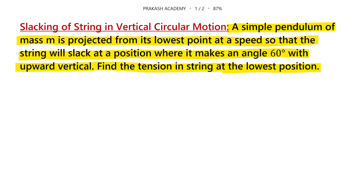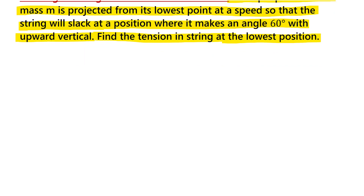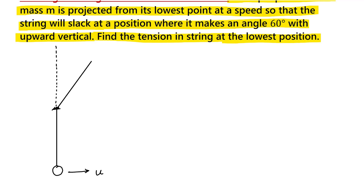Let us analyze this problem. We have a simple pendulum — this is the bob — and it is given some initial velocity U. It makes a motion and finally reaches a point where the string becomes slack, meaning tension becomes zero. T = 0 when this makes an angle theta of 60 degrees.